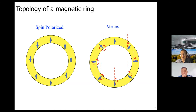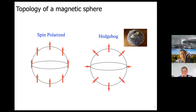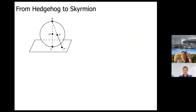This can be generalized to the surface of a magnetic sphere, where spins can point in any direction in three dimensions. Again, there are two topologically inequivalent configurations: spin-polarized and the hedgehog state, in which spins fan outward. The hedgehog state is actually the precursor of a skyrmion.